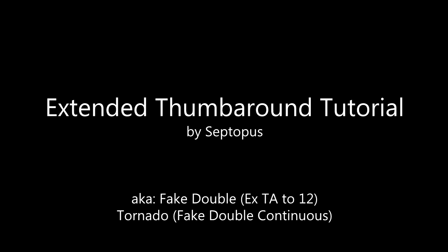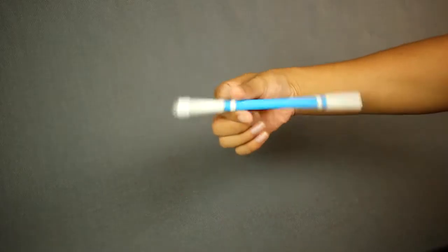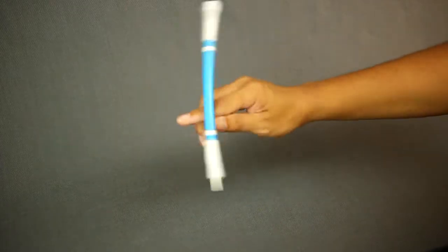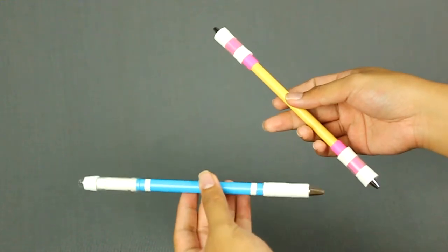Here's a tutorial on how to do the extended thumb around. The extended thumb around looks like this. I recommend using a pen mod for this trick.